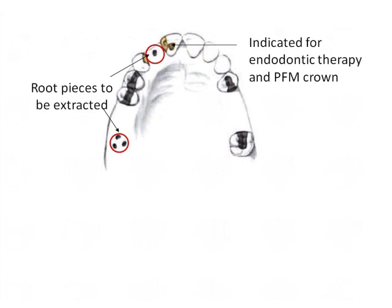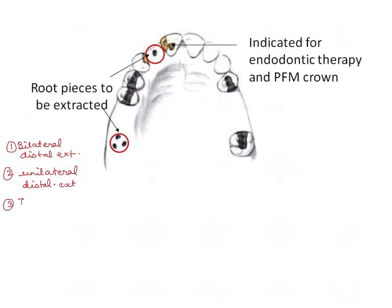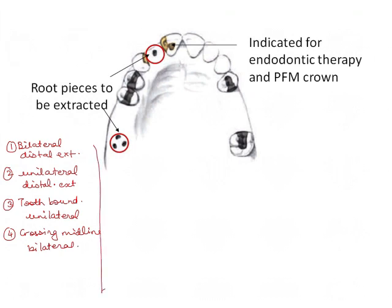Quick revision of Kennedy's classes using Applegate rules: Class 1 is bilateral distal extension, Class 2 is unilateral distal extension, Class 3 is tooth-bound edentulous unilateral, and Class 4 is crossing the midline bilateral.